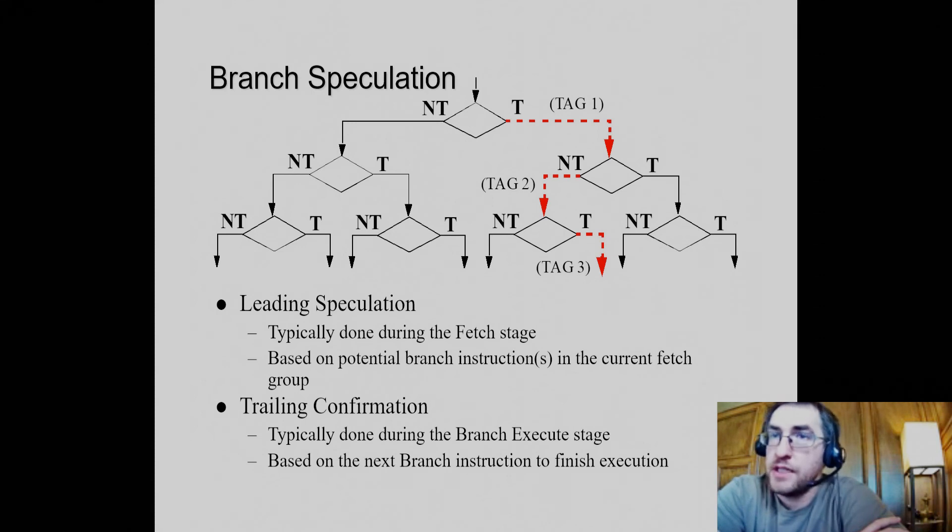For conditional branches, we predict both the target and the outcome. Two predictions, although they're related to each other. We generally can't confirm the target until we finish the branch target calculation. In a MIPS processor, that can happen in the decode stage. And we can't confirm the branch outcome until after we do the evaluation of the branch condition. It may take some time. And in that time, we're fetching more and more instructions. And if we made a wrong prediction, we have to go back and we have to undo our speculation.